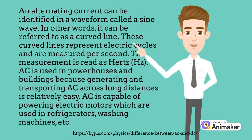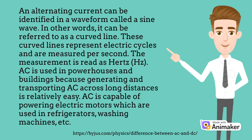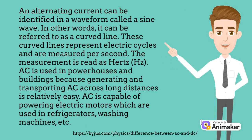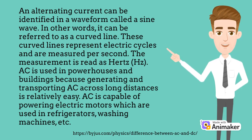Current can be identified in a waveform called a sine wave — in other words, it can be referred to as a curved line. These curved lines represent electric cycles and are measured per second. The measurement is read as Hertz, Hz. AC is used in powerhouses and buildings because generating and transporting AC across long distances is relatively easy. AC is also capable of powering electric motors, which are used in refrigerators, washing machines, etc.